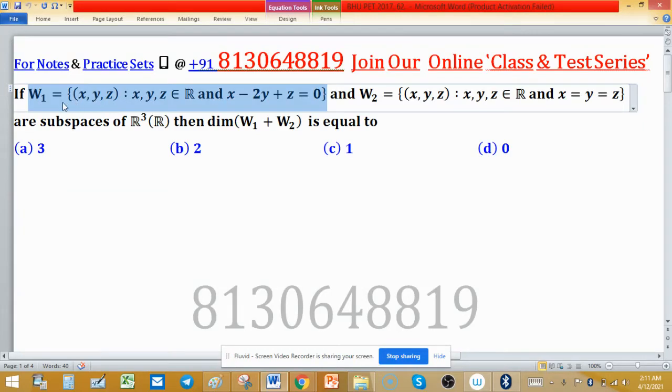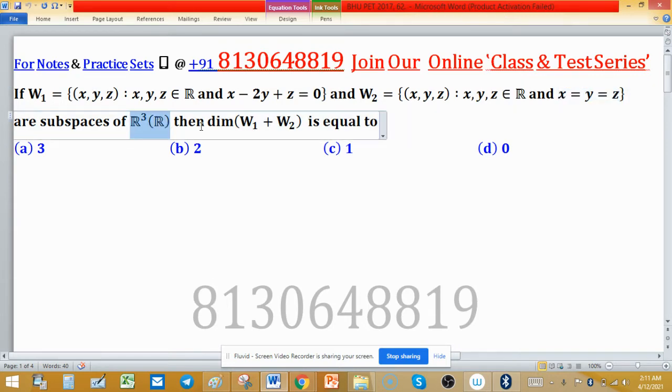W1 is defined by this set and elements of W1 satisfy this property. W2 is defined by this set and elements of W2 have this property. These are subspaces of R³ over R, meaning the field is real. Then dimension of W1 plus W2 can be found using this result.